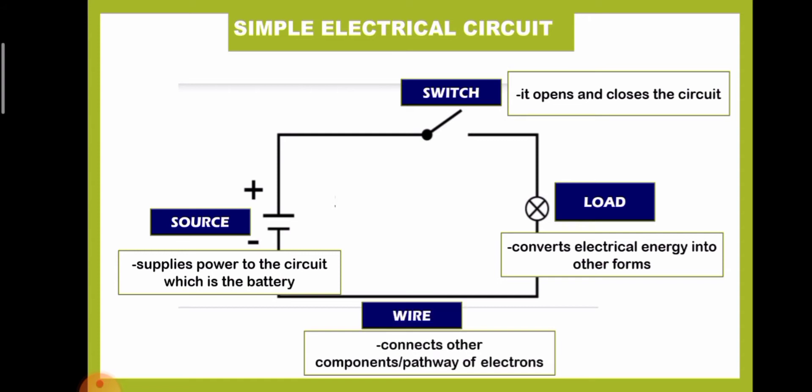We have wire, which connects other components. It is also the pathway for electrons. We also have the source of electricity, which supplies power to the circuit. Battery is the most common example in a simple electrical circuit.